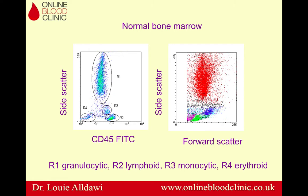For bone marrow, we now use a gating technique using CD45 and side scatter. CD45 is expressed on mature white blood cells, so immature white blood cells will have low CD45, and non-white blood cells will be CD45 negative. For example, erythroid cells (R4) are CD45 negative. R1 granulocytes will have high side scatter because they are granular. R2 lymphoid cells will have low side scatter because they are agranular. Monocytes will be in between.